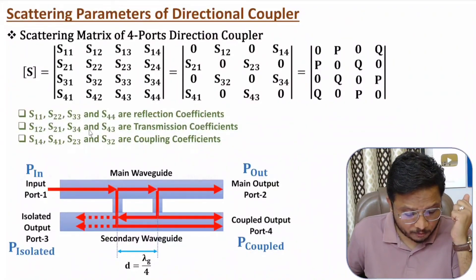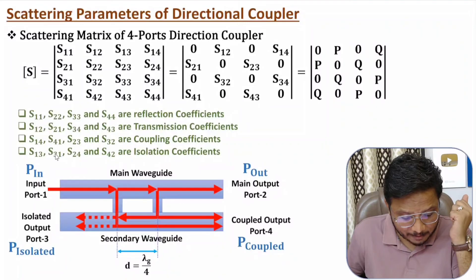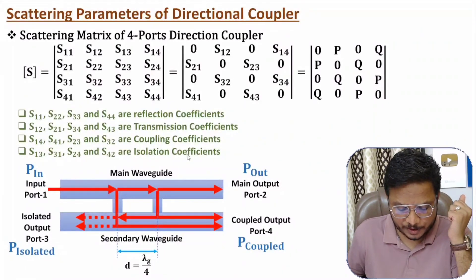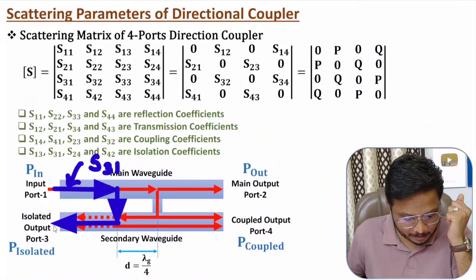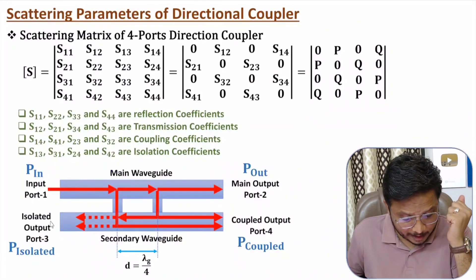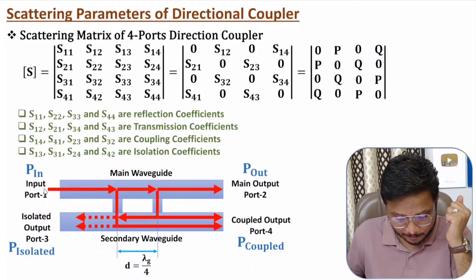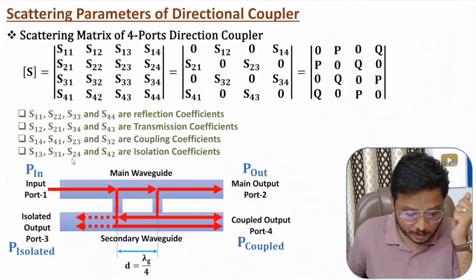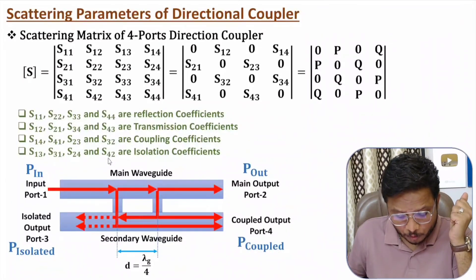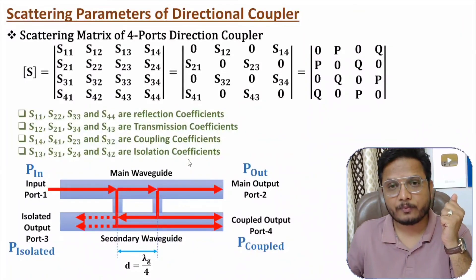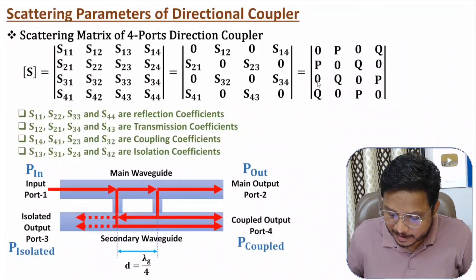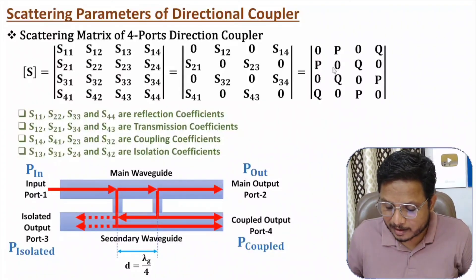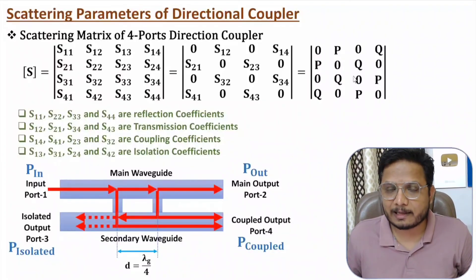The remaining four S-parameters — S13, S31, S24, and S42 — are isolation coefficients. If you apply input at port one, port three should be isolated (S31 = 0), and vice versa (S13 = 0). Similarly, S24 and S42 are also isolation coefficients. Ideally these are zero, which is why they appear as zeros in the ideal scattering parameter matrix of the directional coupler.